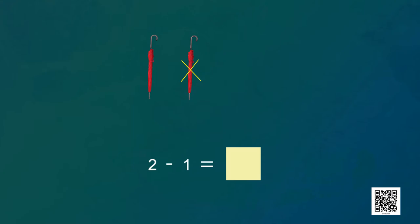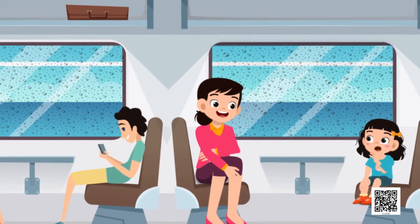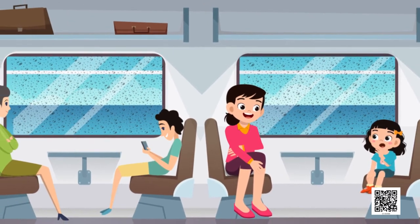But I forgot about Ravi! I will have to give one umbrella to Ravi too, so I subtract one more. We write two minus one. Subtracting one from two, I get one. Only one umbrella is left. Maybe it's even better that Ravi will be happy. So subtraction is so much fun — taking some numbers away from all.